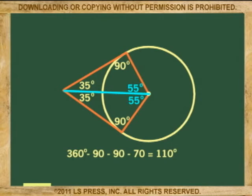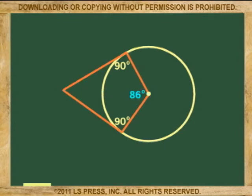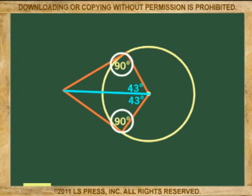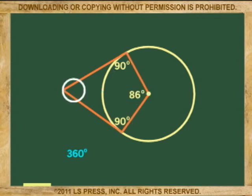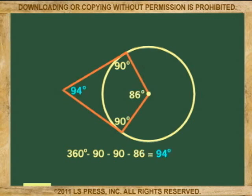Because the secant is a bisector, each of these angles is 110 divided by 2, or 55 degrees each. Let's do another example backwards using a known central angle to determine the outside angle. If this central angle changes to 86 degrees, then these two angles are 43 degrees each. Because the angles at the tangent points are always 90 degrees and the whole quadrilateral has 360 degrees, this outside angle must be 360 minus 90 minus 90 minus 86, or 94 degrees.